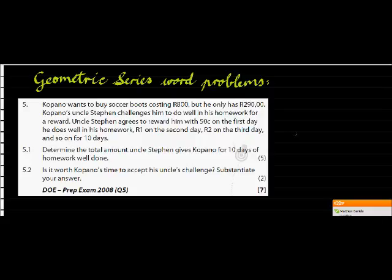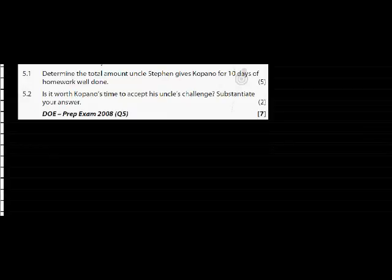Kapano wants to buy soccer boots costing 800, but he only has 290. Kapano's uncle challenges him to do well on his homework for a reward. Uncle Stephen agrees to reward him with 50 cents on the first day he does well in his homework, 1 rand the second day, 2 rand the third day, and so on for 10 days. So here we go.